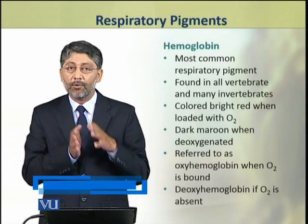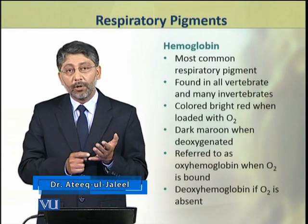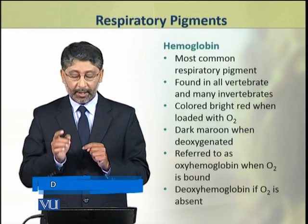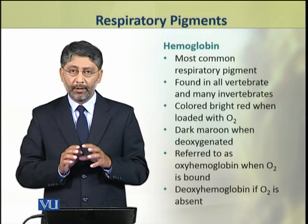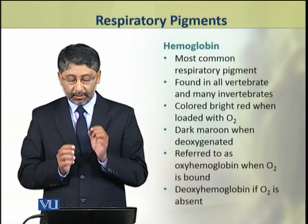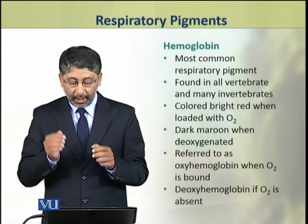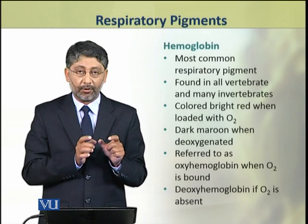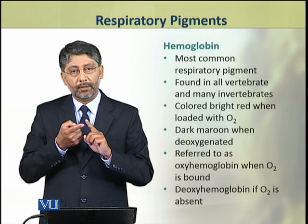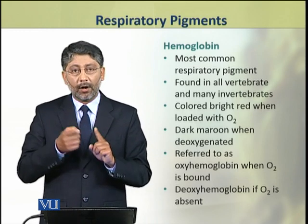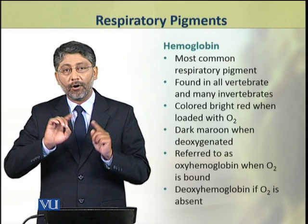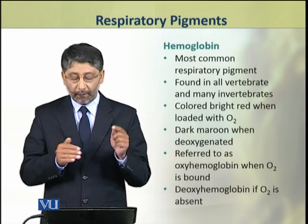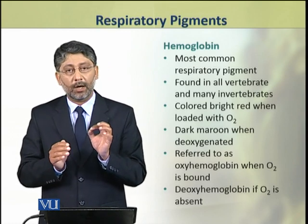First we are going to discuss hemoglobin in detail. Hemoglobin is the most common respiratory pigment, which is found in all vertebrates and many invertebrates. It is coloured bright red when it is loaded with oxygen, while its colour is dark maroon when it is deoxygenated. It is referred to as oxyhemoglobin when oxygen is bound, and as deoxyhemoglobin when oxygen is not bound or absent.